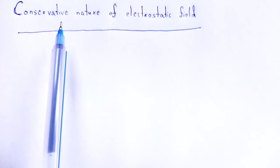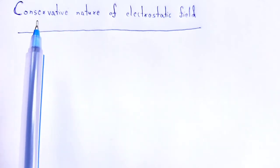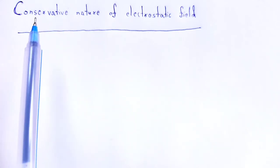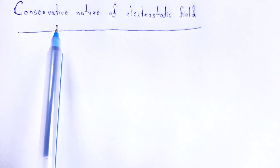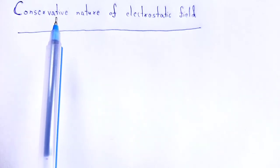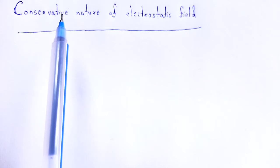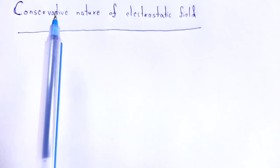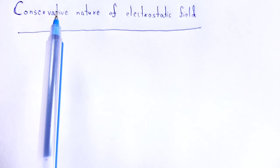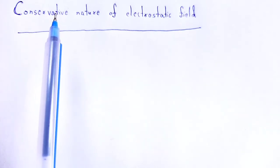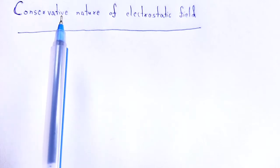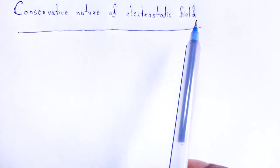What is the definition of a conservative field? A field is said to be conservative when the work done in that particular field is independent of the path followed, but depends upon the initial and final points. If exactly that thing happens in the case of the electrostatic field, then we can say that field is conservative in nature.